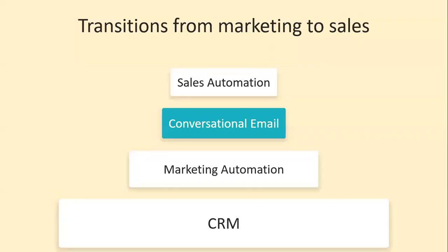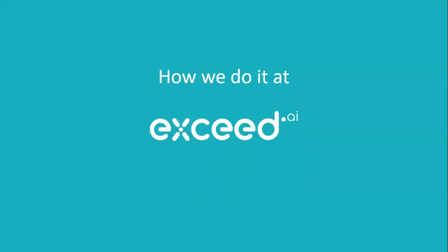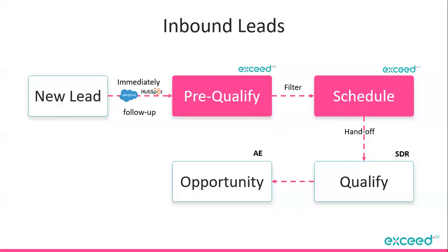How does conversational email fit in the tech stack? Looking at a basic stack, you have the CRM, marketing automation which marketing uses, and sales automation which sales uses. Conversational email sits somewhere in between, because the goal of conversational email is to get the lead from marketing to sales — it's basically the bridge between the two. This is why it's very much something you should be writing alongside your sales or sales development team to make sure handoffs are streamlined.